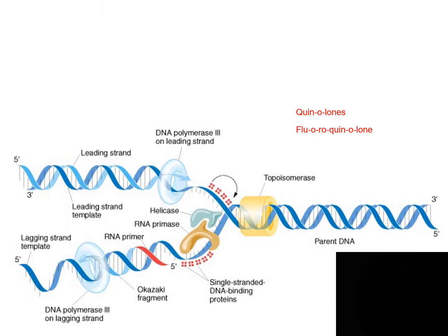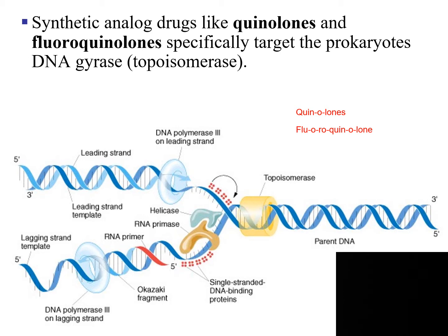Synthetic analog drugs like quinolones and fluoroquinolones specifically target the bacterial gyrase. Remember when DNA is replicating, as helicase moves from left to right in this image, a supercoil will be created. Topoisomerase will alleviate that supercoil. So, these two synthetic drugs, quinolones and fluoroquinolones, both target that topoisomerase.